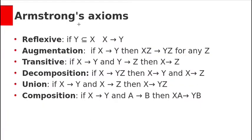Armstrong's Axiom rules are: Reflexive rule — if Y is a subset of X, then X → Y is a valid functional dependency. Augmentation rule — if X → Y is a valid functional dependency, then XZ → YZ is valid for any Z. Transitive rule — if X → Y and Y → Z are valid functional dependencies, then X → Z is also a valid functional dependency.